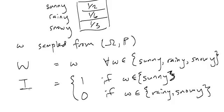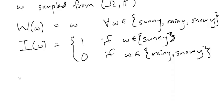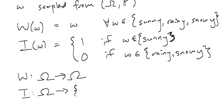Note that W and I are functions of little omega. W maps from the sample space to, well, it actually maps it to the sample space again, whereas I maps from the sample space to 0, 1.